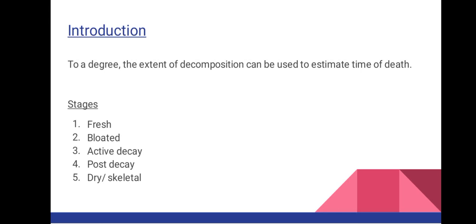It's important to note that the extent of decomposition can be used to estimate time of death. We have five stages of decomposition: namely fresh, bloated, active decay, post decay, and dry skeletal. I'm going to look at them one by one, beginning with the first one.